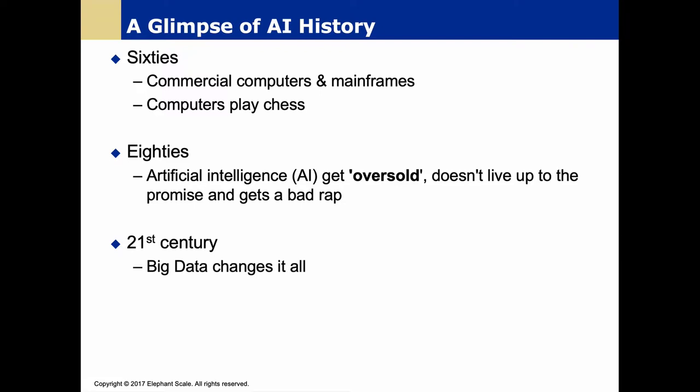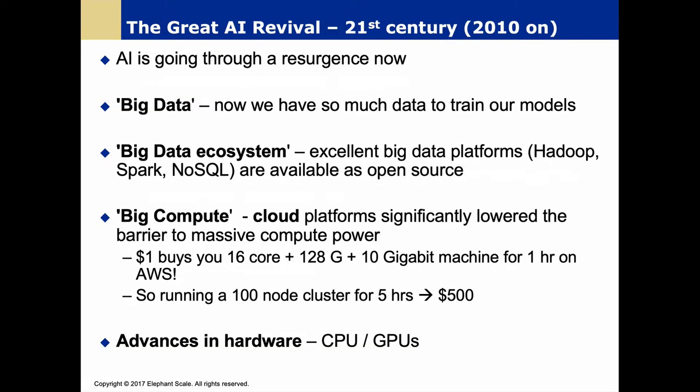Looking at a glimpse of AI history: back in the 60s, computers were playing chess. In the 80s and 90s, there was something called the AI winter — AI got a bit oversold and didn't live up to the promise. But that has all changed now with the advent of big data. A lot of AI approaches, especially in machine learning, have proven most effective when we have a lot of data, and it's no coincidence that the boom in big data technologies like Hadoop has given birth to a renaissance of AI.